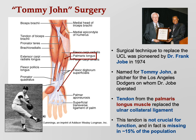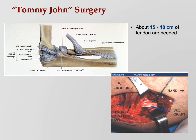Palmaris longus is one of the flexors of your fingers, but you actually have three muscles that flex your fingers. Palmaris longus is the most superficial and not a major player — in fact, 15 percent of the population is missing it entirely. So it's no big deal to harvest its tendon. About 15 to 18 centimeters of tendon is needed — roughly six inches, since there are about two and a half centimeters per inch.